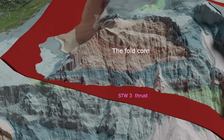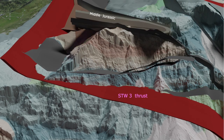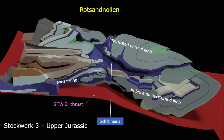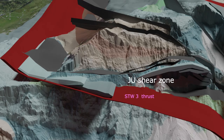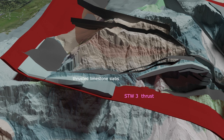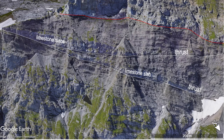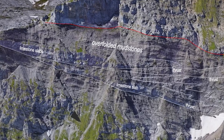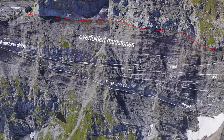Upon closer inspection, the core of the recumbent fold reveals several tightly isoclinal folded slivers. The core appears to be a wedge shape pressed into the split-apart Upper Jurassic recumbent fold limbs. The northward push of the core took place across a 100-meter-thick shear zone of Upper Jurassic marls intercalated with meter-thick competent limestone slabs. The deformation mechanism within the shear zone is beautifully revealed: competent limestone experienced brittle folding, whereas the incompetent marl sequence deformed semi-ductilely into several shear zones with tight folds.